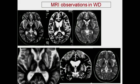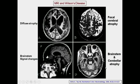Here are several examples: this is the putamen, this is the thalamus, and this is the caudate. Again, putamen, thalamus, and there is dilatation of the ventricle. This is what we call the bright claustral sign. With chronicity, iron deposits cause hypointensity in the pallidum. You can see diffuse atrophy, focal atrophy, and brainstem and cerebellar atrophy.